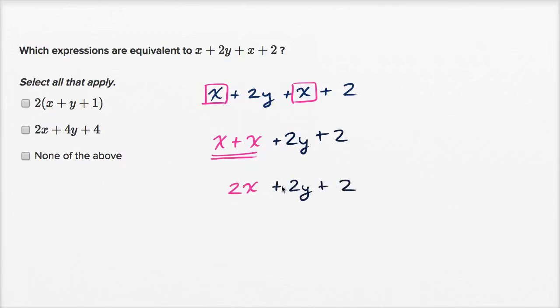Now let's see, out of all of my choices, so this one, this is 2x plus 4y plus 4. So that's not right. I have 2x plus 2y plus 2. So I can rule this one out.